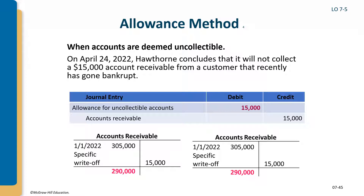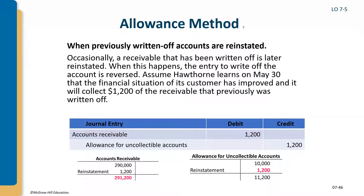When an actual bad account occurs, on April 24th Hawthorne concludes it will not collect a $15,000 accounts receivable: credit accounts receivable $15,000, debit allowance for uncollectible accounts $15,000. Don't debit bad debt expense — we already estimated for this and stored it in the allowance account. The allowance started with a $25,000 credit; $15,000 was written off, leaving a $10,000 credit balance.